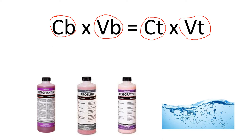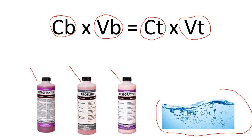Here at the bottom, we have the elements of the potential solution that we would be putting together. We have Intrafliant, which is an arterial fluid. We have Proflo, which is a type of supplemental fluid. We have Restorative, which is another type of supplemental fluid. And then, of course, we have water, which will be acting as our solvent.